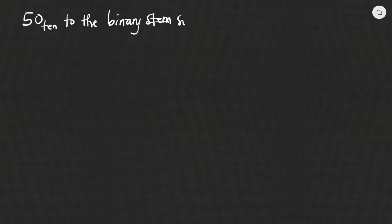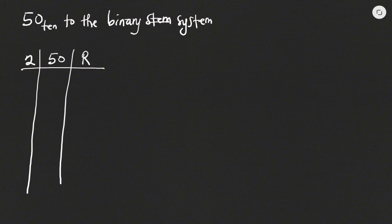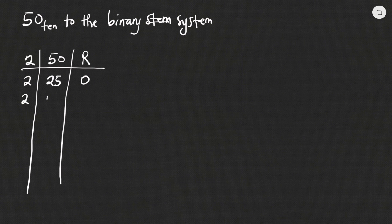Let's look at more examples. This time we want to convert 50 base 10 to the binary system. Remember, binary system means base 2. We write down 2, write our number 50, then write down our remainder. How many times would 2 go into 50? It will go 25 times, which is exactly 50, so remainder is 0. How many times would 2 go into 25? 12 times, which is 24, so remainder is 1.